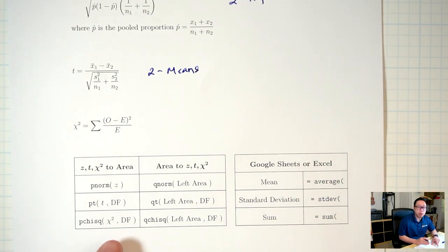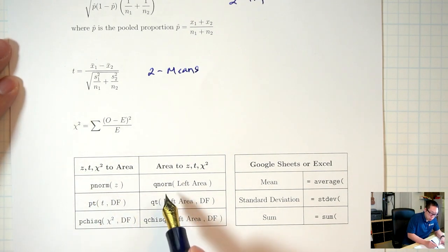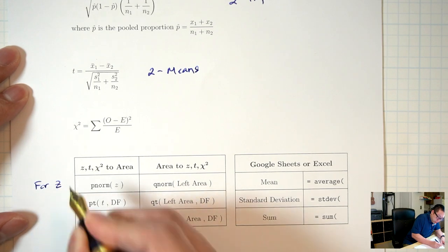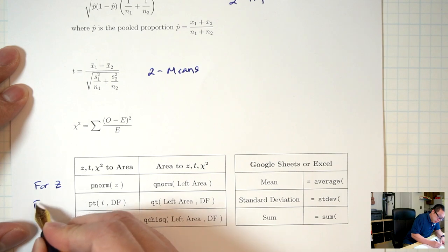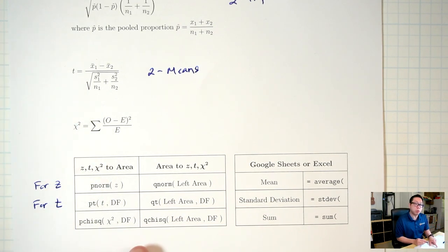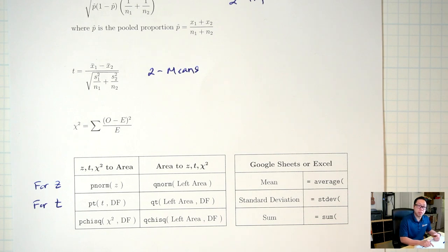At the bottom left box, these are commands in R that we'll need. We've seen most of these before. pnorm and qnorm are for the z situation. pt and qt are for the t situation. The last row is for the chapter 12 stuff, so we'll skip that for now. On the right side, these are commands in Google Sheets or Excel. We'll be using this today, so let me skip this and come back later.